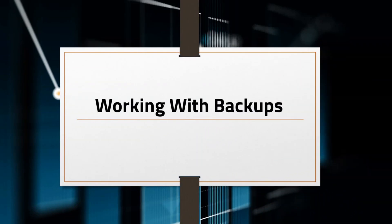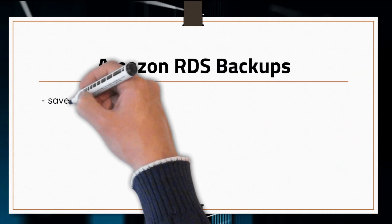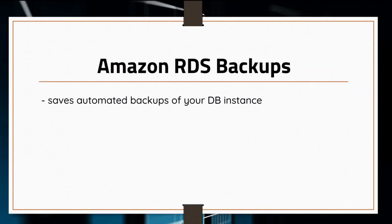Taking backups are a critical part of database administration. Amazon RDS creates and saves automated backups of your database instance during the backup window. It creates a storage snapshot of your database instance, backing up the entire instance, not just individual databases. These automated backups are stored based on your database retention period that you specify. If necessary, you can always recover your database to any point in time during the backup retention period.